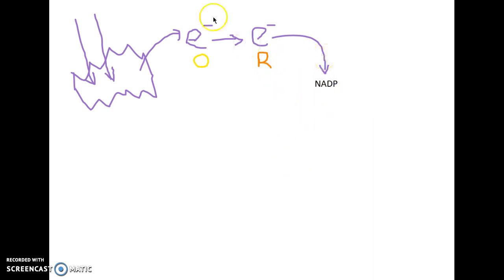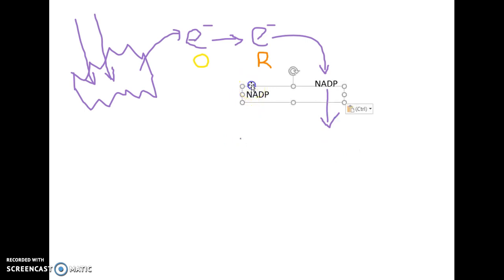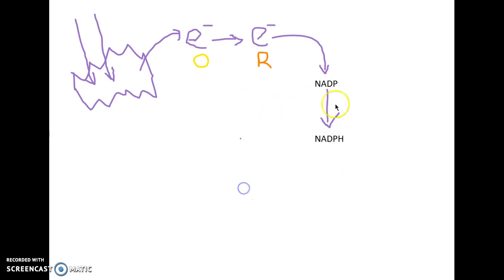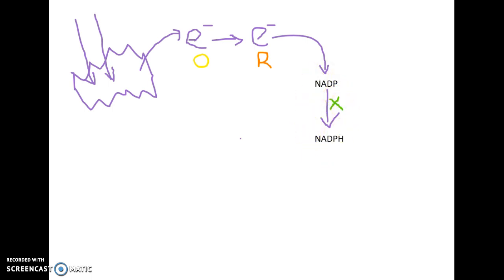NADP combines with these electrons and protons to form NADPH — reduced NADP. This reaction is catalyzed by the enzyme dehydrogenase. So dehydrogenase will work here in order to allow for NADP to become NADPH.